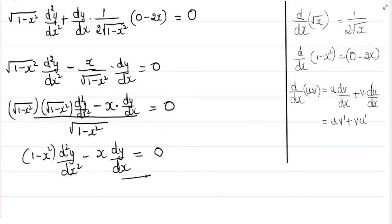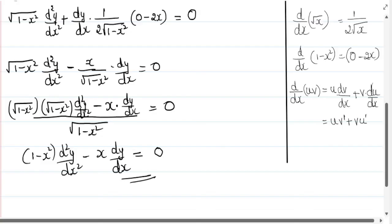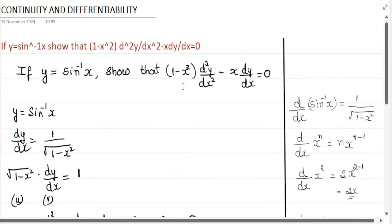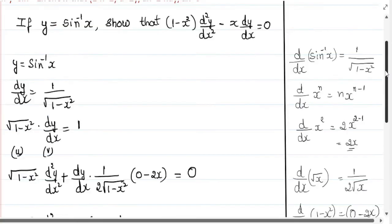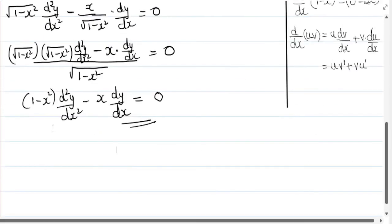This is the answer. We can see that this matches the required result: 1 minus x squared into d squared y by dx squared minus x into dy by dx equals 0. We got the answer.